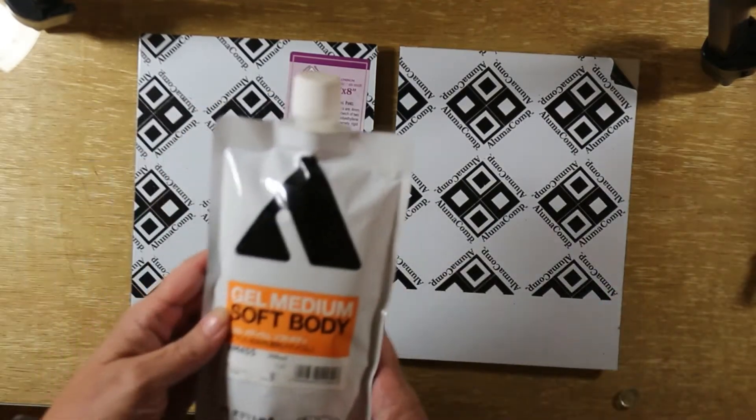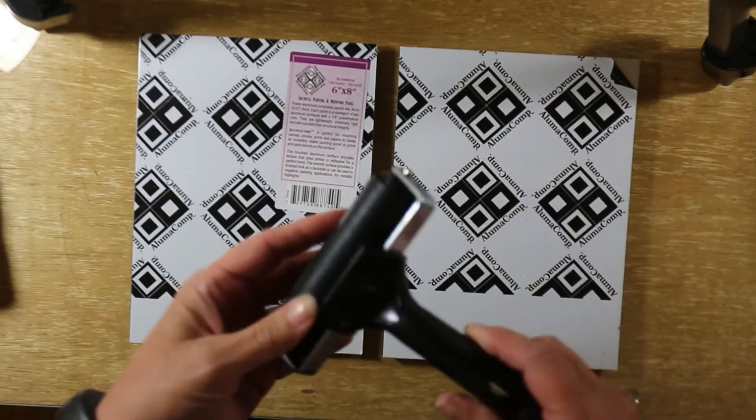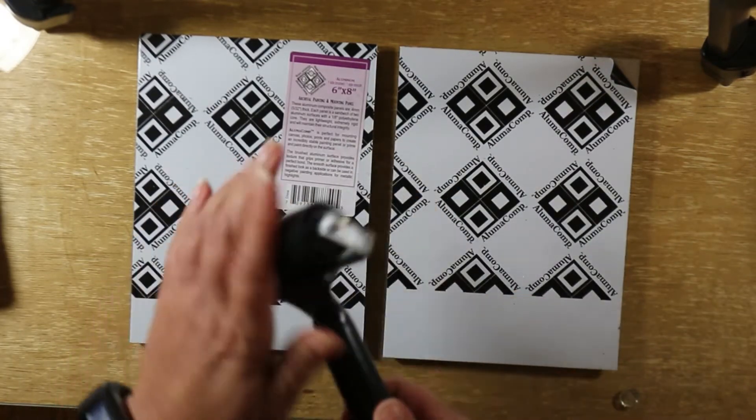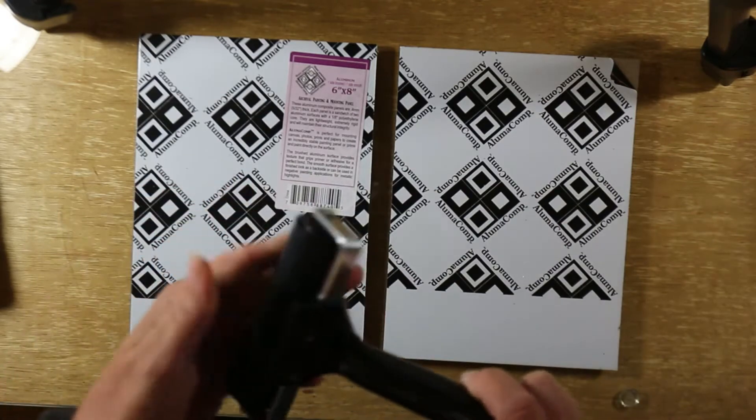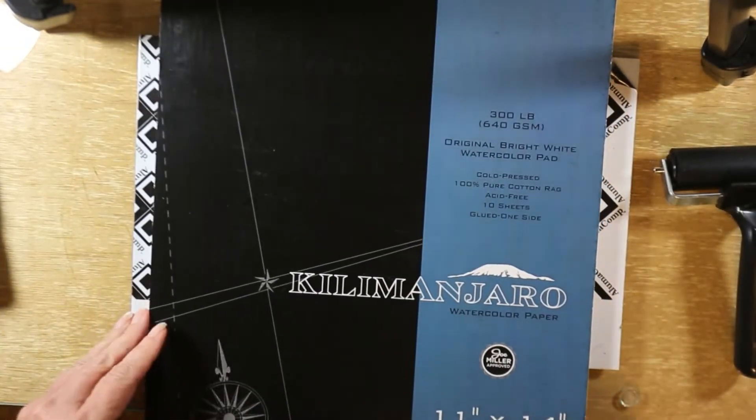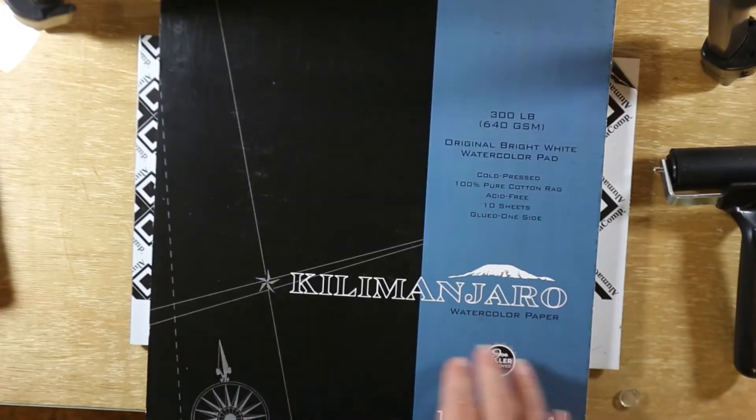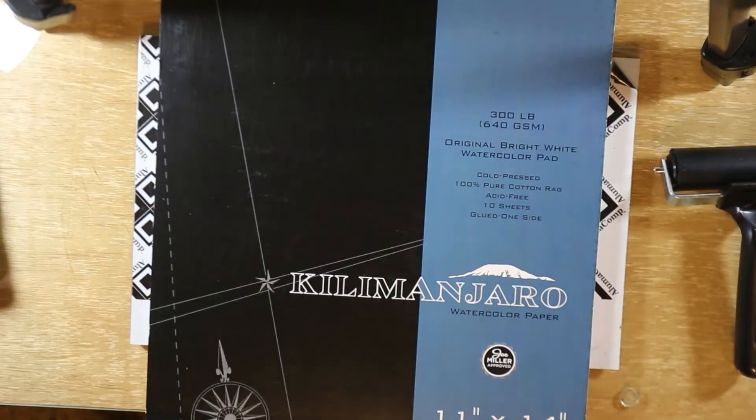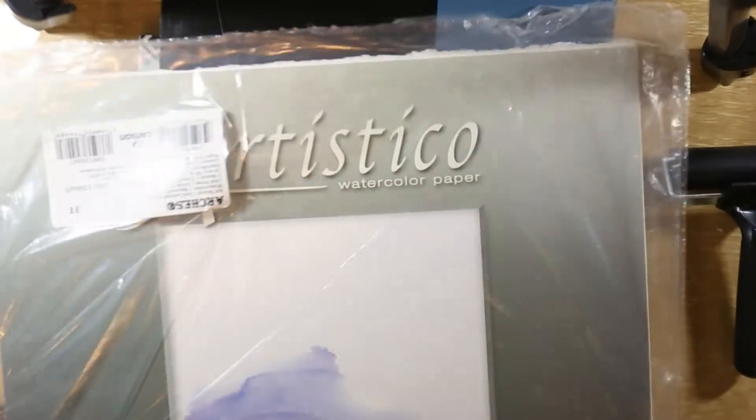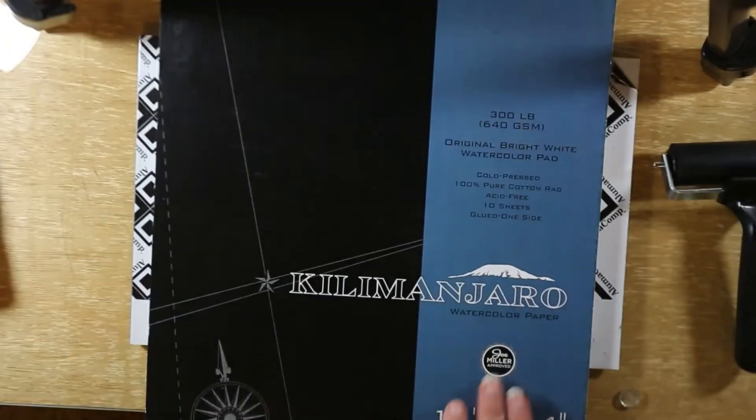Lynn recommends using Holbein's gel medium soft body. I am also going to use a brayer that I had to buy for this specifically. I haven't had one of these since high school. Kilimanjaro paper. This is 300 pound. Lynn recommended using 300 pound paper that the 140 pound that she tried didn't do quite as well. I happen to also have some Fabriano Artistico. This is also 300 pound. This is cold press. Both of these are cold press.